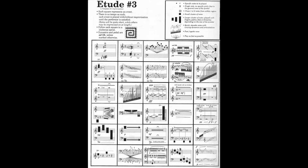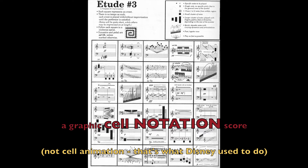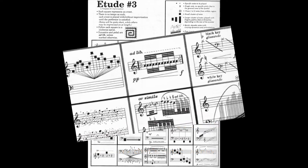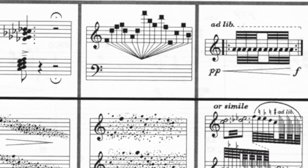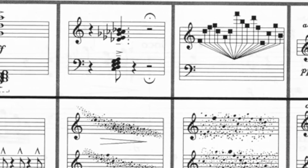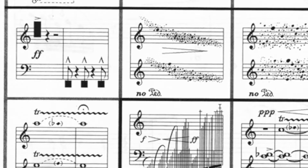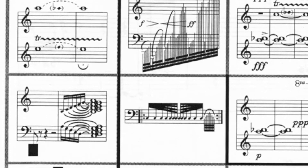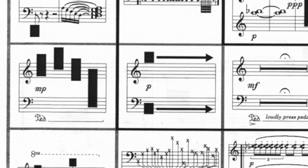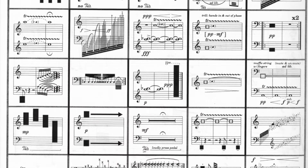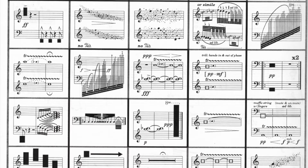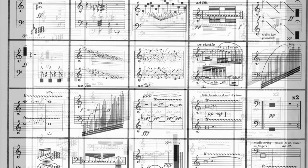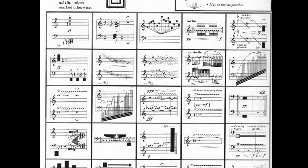The third piece is a graphic score — a type of cell animation. There's a whole bunch of different actions, or gestures: little musical motifs and ideas, and you play one and go on to the next. The piece is supposed to be followed in a spiral, but you don't necessarily have to play that way. You can jump around and play one sound on another, and the sounds are to be improvised somewhat, so every performance is going to be somewhat different.